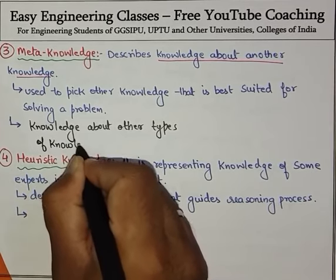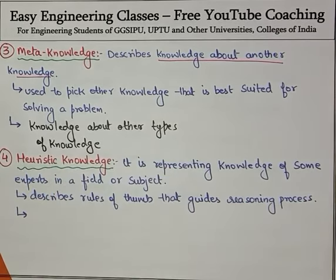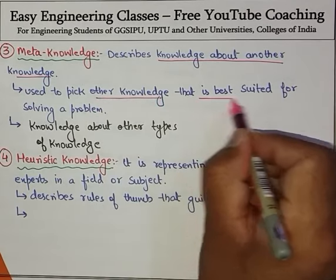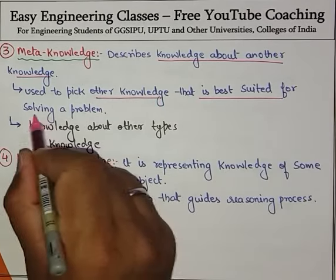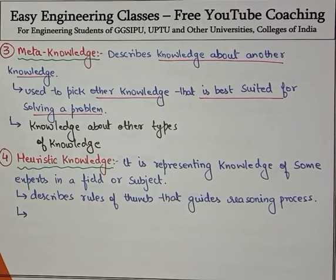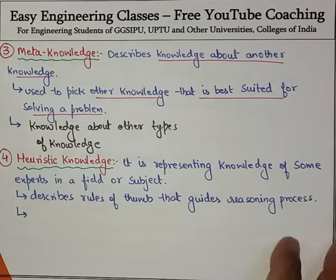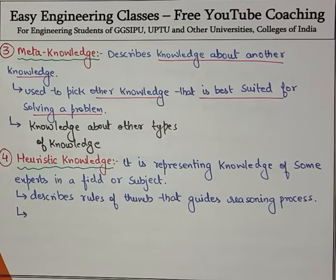Meta knowledge is used to pick other knowledge that is best suited for solving a problem. So if a problem comes to you and you have a lot of knowledge, meta knowledge helps in picking the right type of knowledge from among others to solve that particular problem.